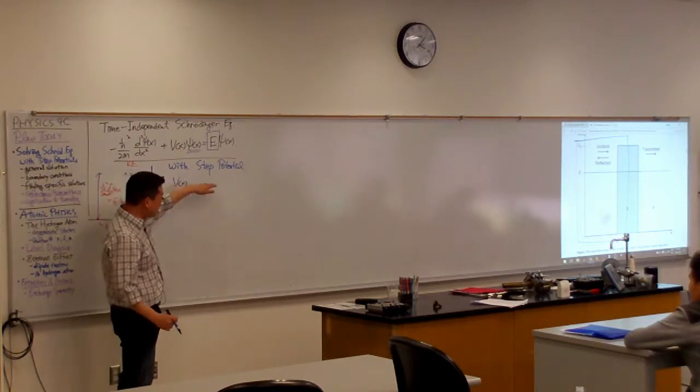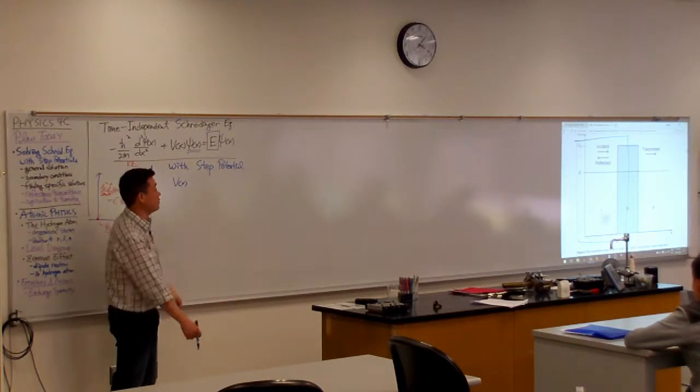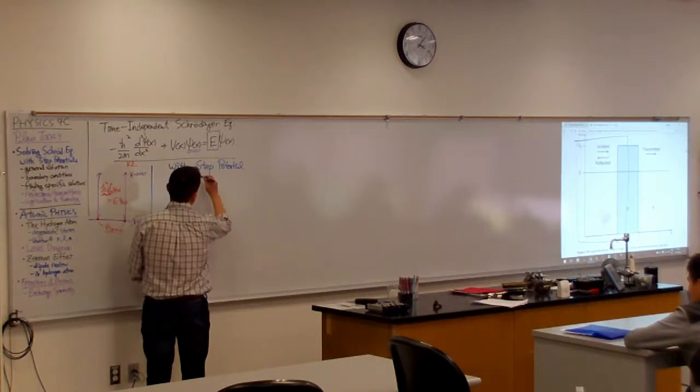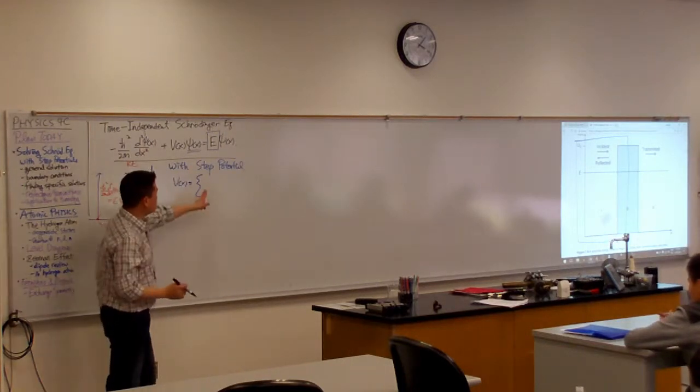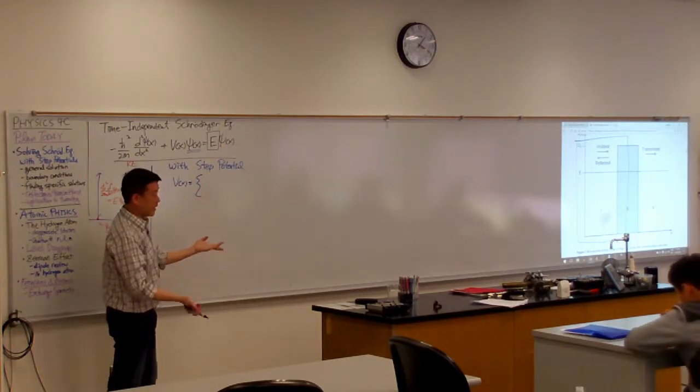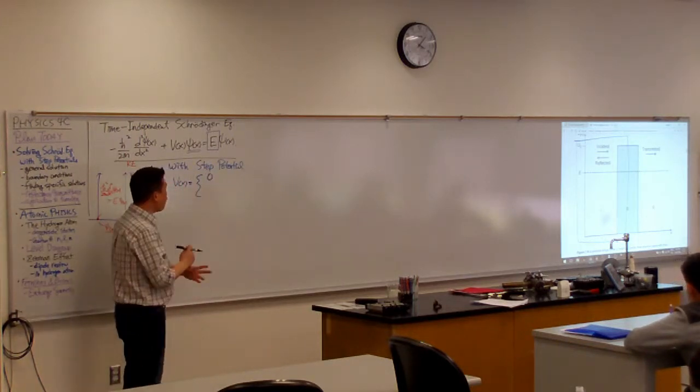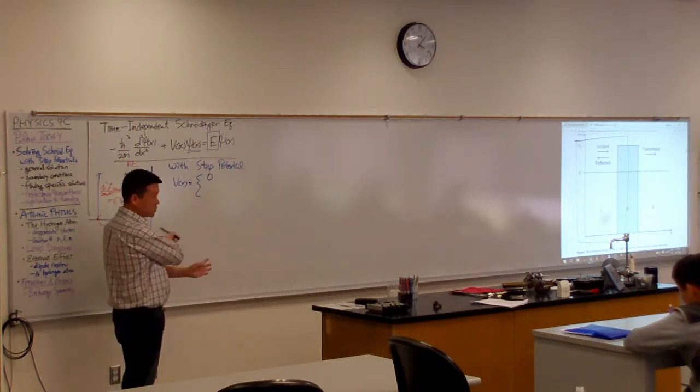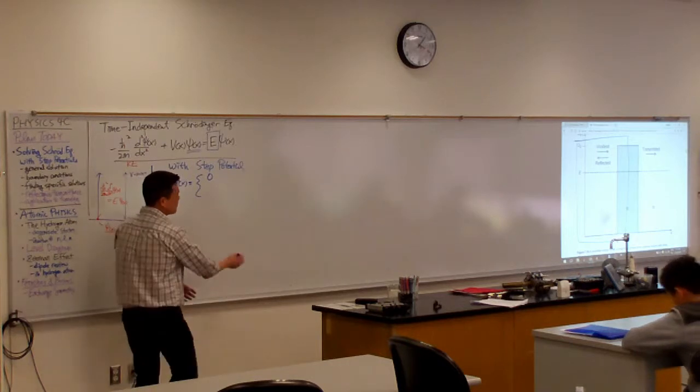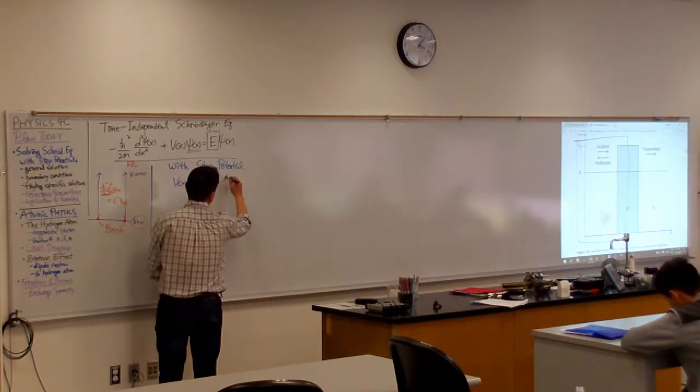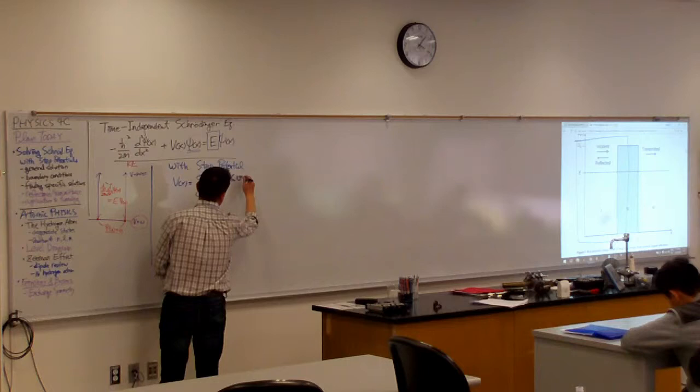So, here's one kind of simplest step. It can be zero for all values of X below some particular value. Let's make things easy for ourselves and let's say for X less than or equal to zero.